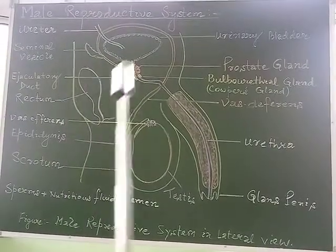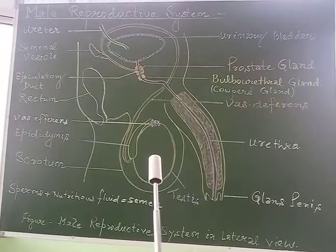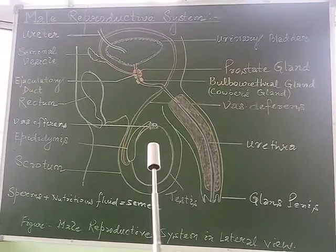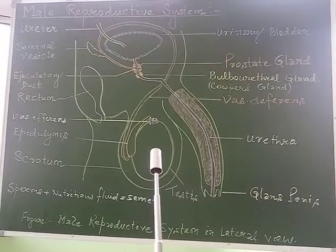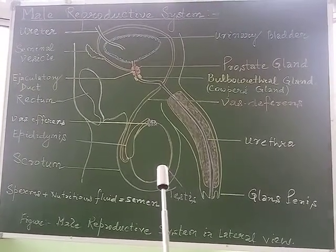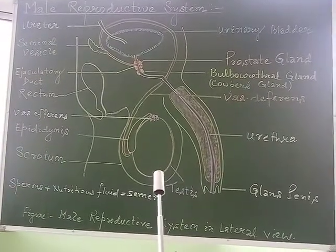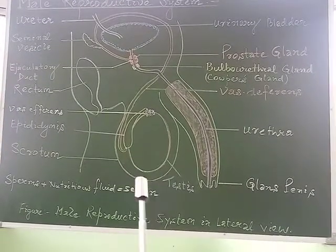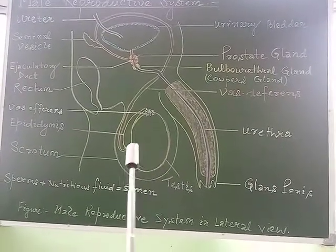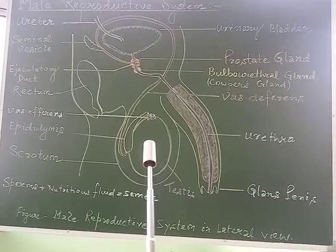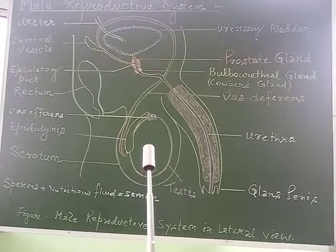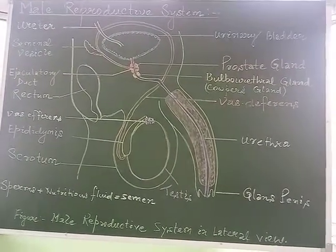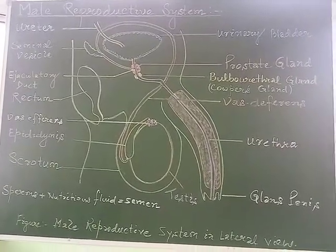The functions of the male reproductive system include: production of testosterone and other androgens within the testis, which maintain the system in a functional state and develop male secondary characters; formation of sperms by germinal epithelial cells within the testis through the process of spermatogenesis; and transfer of sperms by the penis into the vagina of the female during copulation.